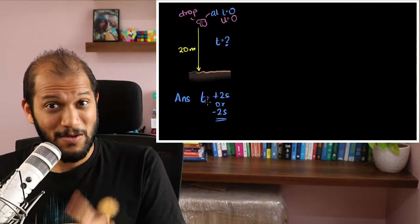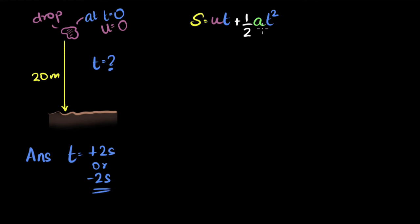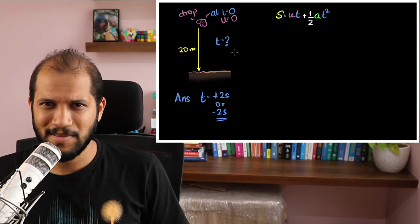So let's look at the equation we use: one of the kinematics equations, s equals ut plus half at squared. We know the displacement s, we know the initial velocity which is zero, we know the acceleration — this is free fall, so acceleration is gravitational acceleration, 9.8 or 10 meters per second squared.